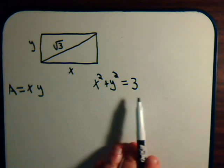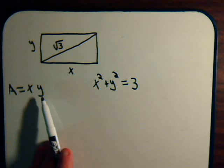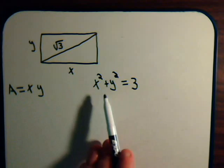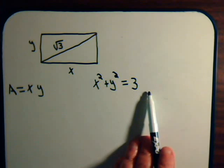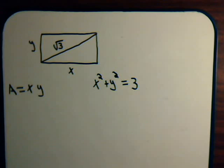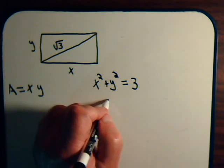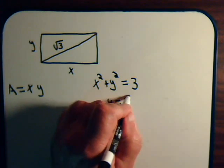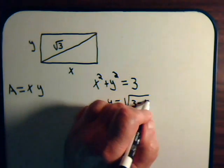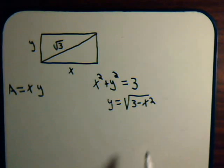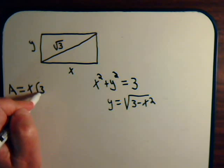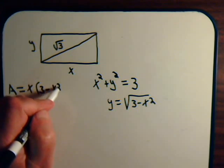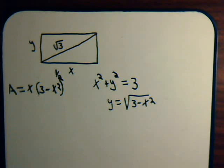This constraint equation lets us replace x with y or y with x, expressing the area in terms of one variable. We'll have y equal to the square root of 3 minus x squared, or equivalently (3 minus x squared) to the one-half power. Then we substitute that into the area to get A = x times (3 minus x squared) to the one-half.